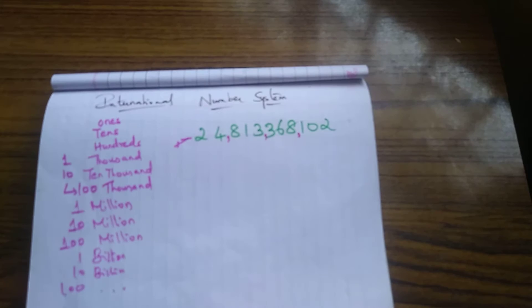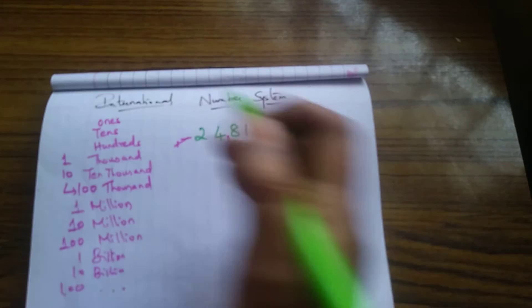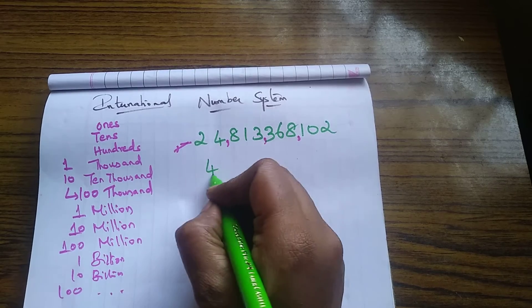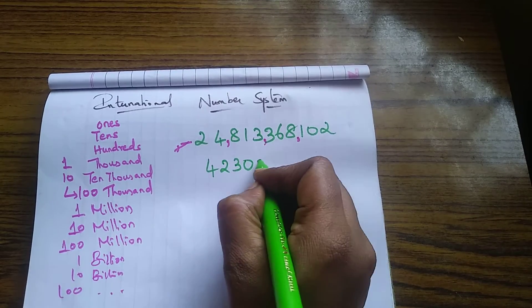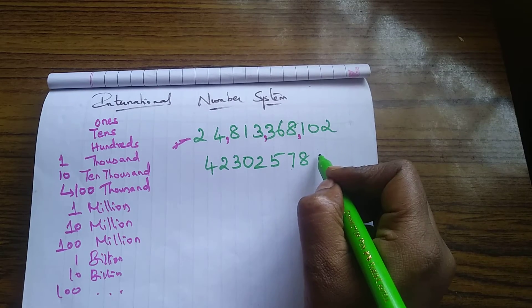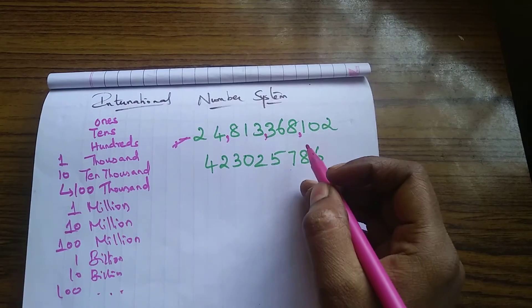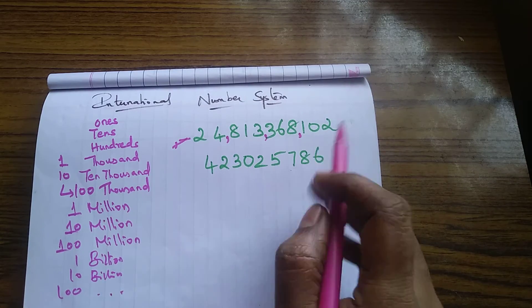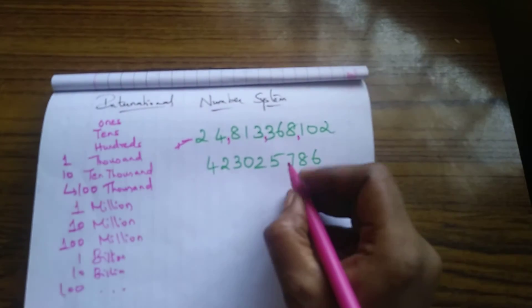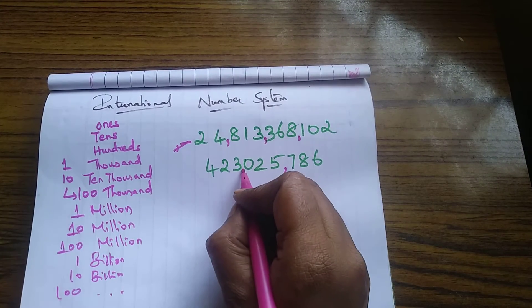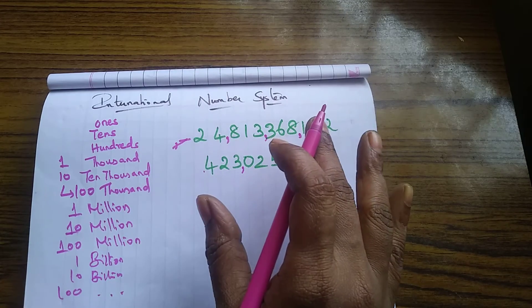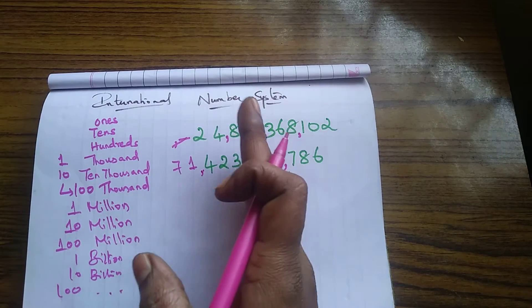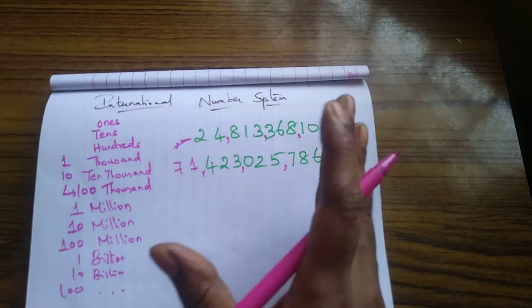Children, first know how to place the commas for a number. Shall we try one more number? Let the number be 423025786. How are we going to place the commas using the international number system? It is very simple — for each and every group of three digits from right to left, you place a comma. So: 7, 8, 6 — comma; then 0, 2, 5 — comma; and 4, 2, 3 — no more numbers, so we stop. This is how you place the commas for every three-digit group.